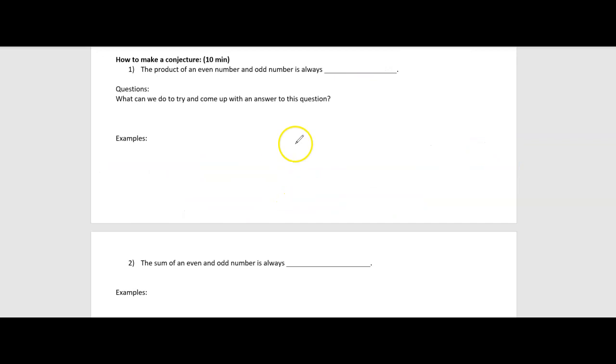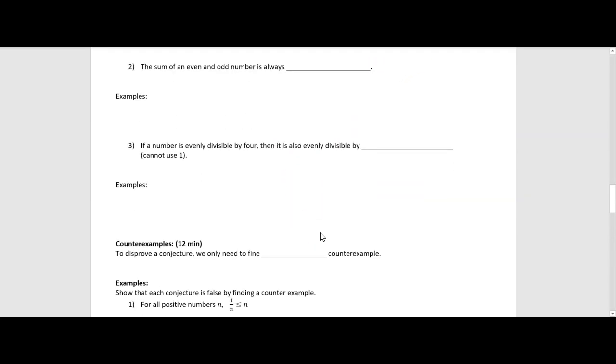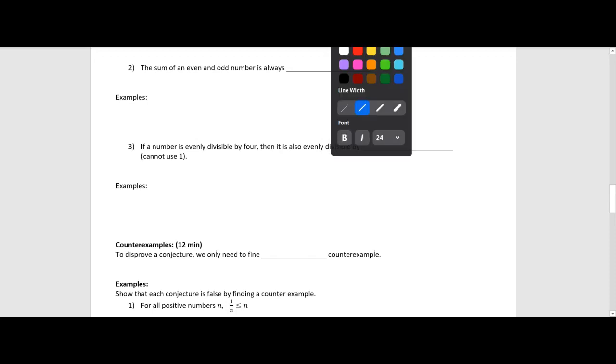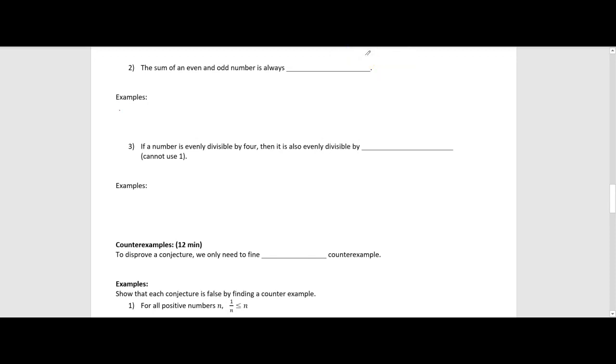Number two says, the sum of an even and odd number is always blank. Well, let's do some examples. So three plus four, because sum means add, that's going to be equal to seven. Let's do a negative one. So I could have negative three plus negative six, that gives me negative nine. Let's do 25 plus 10, that gives me 35. And let's do eight plus one, which is nine.